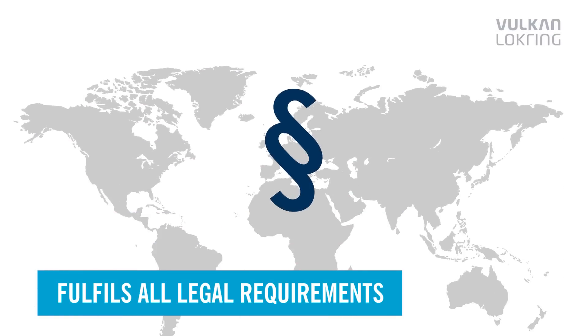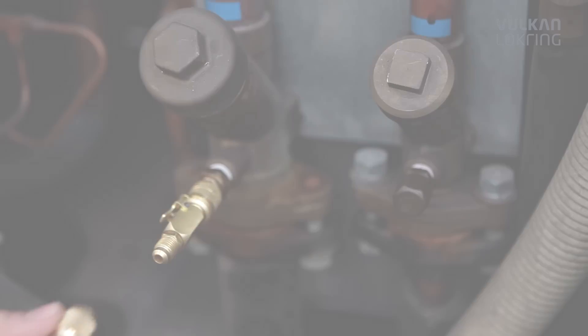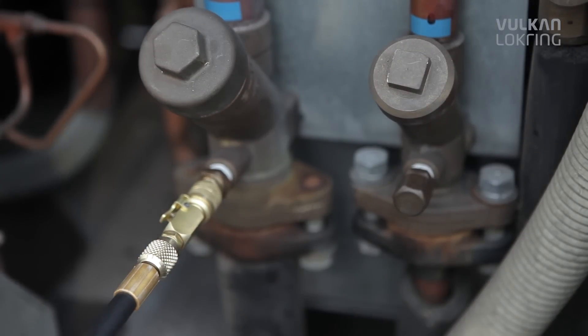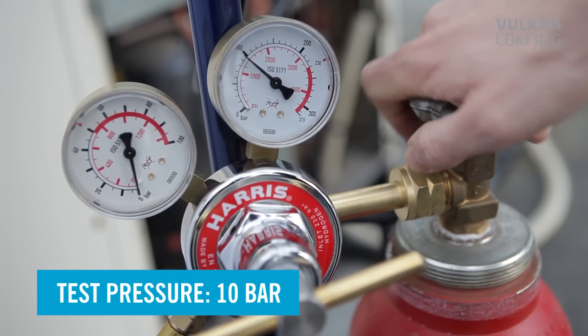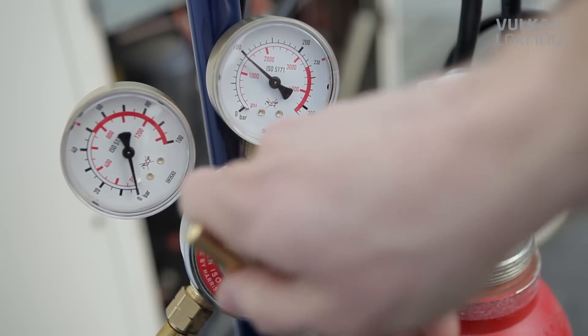LOCTRACE fulfills all the legal requirements for leak detection methods worldwide. And this is how easy it is. For leak detection, charge Forming Gas 95.5 at a pressure of 10 bar into the high pressure side of the empty refrigeration circuit.